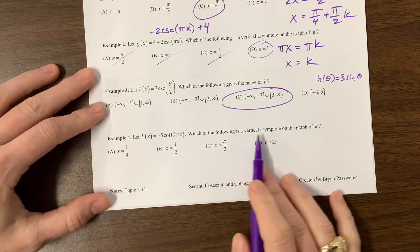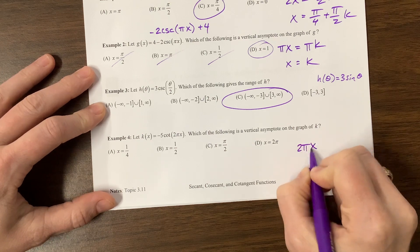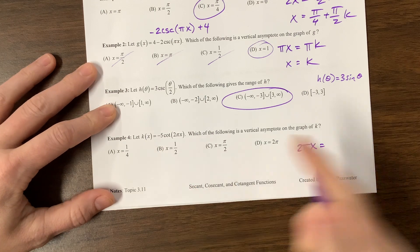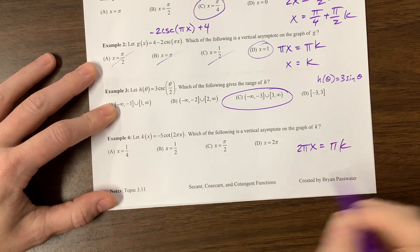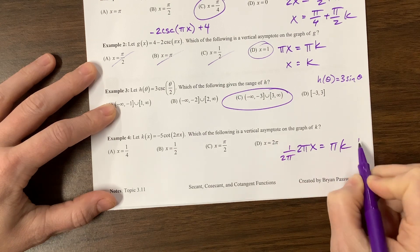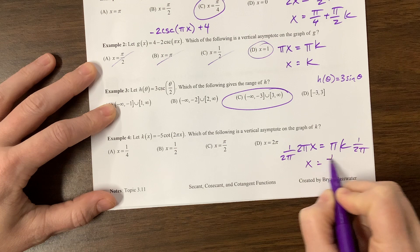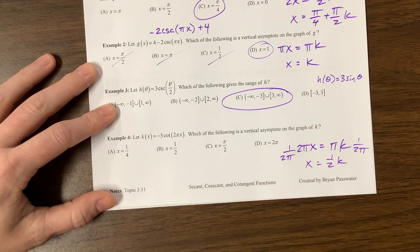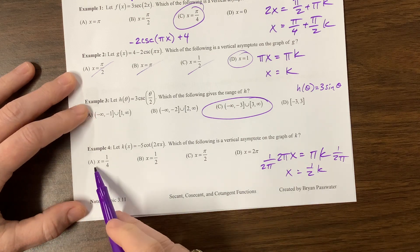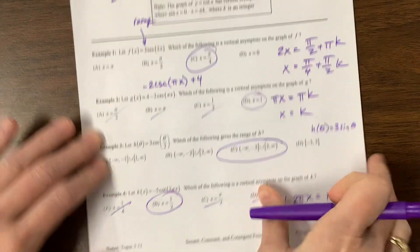Next one here. What is the vertical asymptote? For cotangent, we can take this two pi x and set it equal to where cotangent typically has asymptotes. Cotangent typically has asymptotes at pi k. We can multiply by one over two pi. The pies will cancel and I get x is equal to one half k. So it's one half, it's one, it's three halves, it's two and so forth. This is not good, this is not good, this is not good. Here we go.